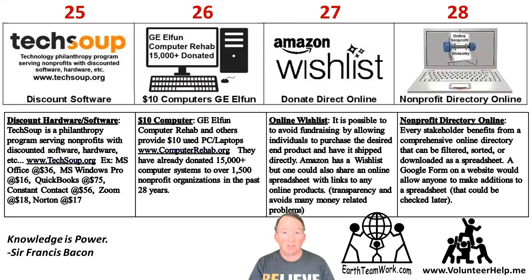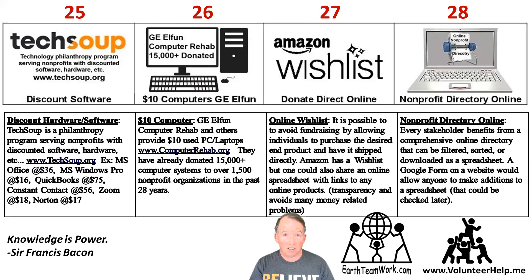Tools 25 to 28 include discounted hardware and software, $10 computers, online wish lists, and a nonprofit directory online. TechSoup is a philanthropic organization that specializes in finding discounted hardware and software for nonprofit organizations. You can save huge amounts of money by going through them instead of writing special grants to spend a lot of money.